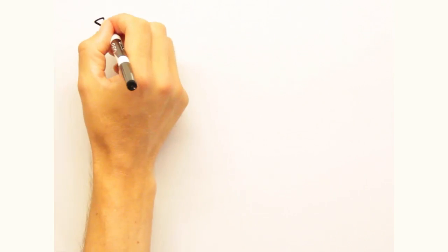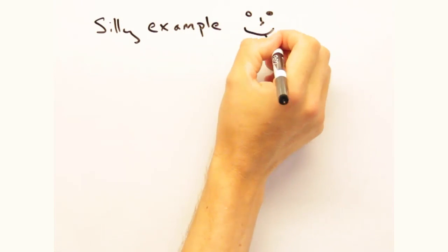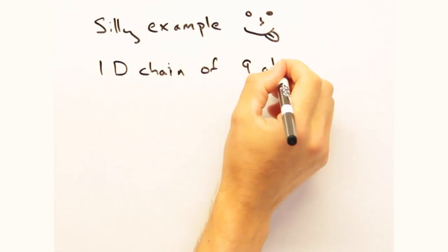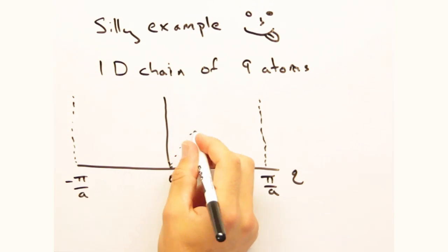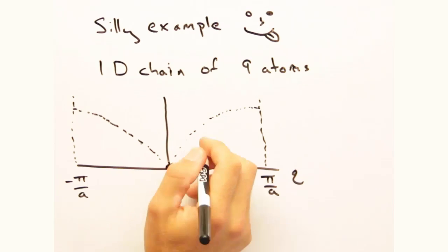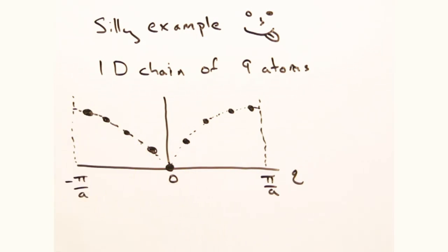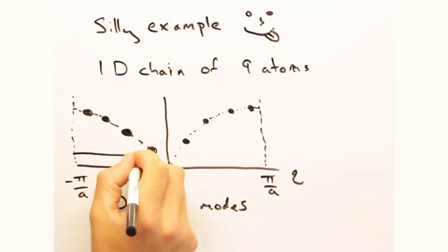To see this a bit clearer, let's look at a 1D chain of nine atoms. What would its dispersion look like? Well, we already know it should have a sine shape. But instead of a line, we fill it with discrete points with one at the origin and four on either side as so. Recall that the spacing between points is 2 pi over L.